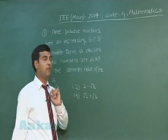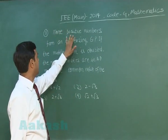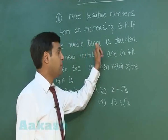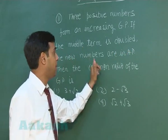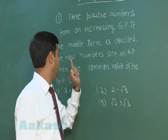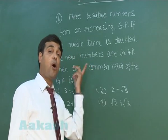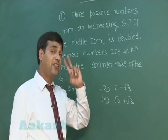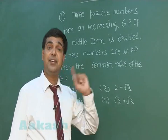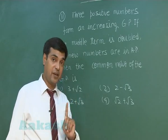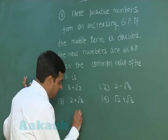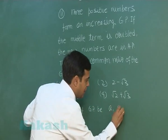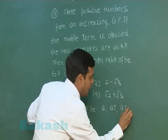Let us go for question number 11. Three positive numbers form an increasing GP. If the middle term is doubled, then the new numbers are in AP. We have to find the common ratio of the given GP. The question is quite simple: three numbers are in increasing GP, means common ratio is greater than 1. Let the numbers be a, ar, ar square.